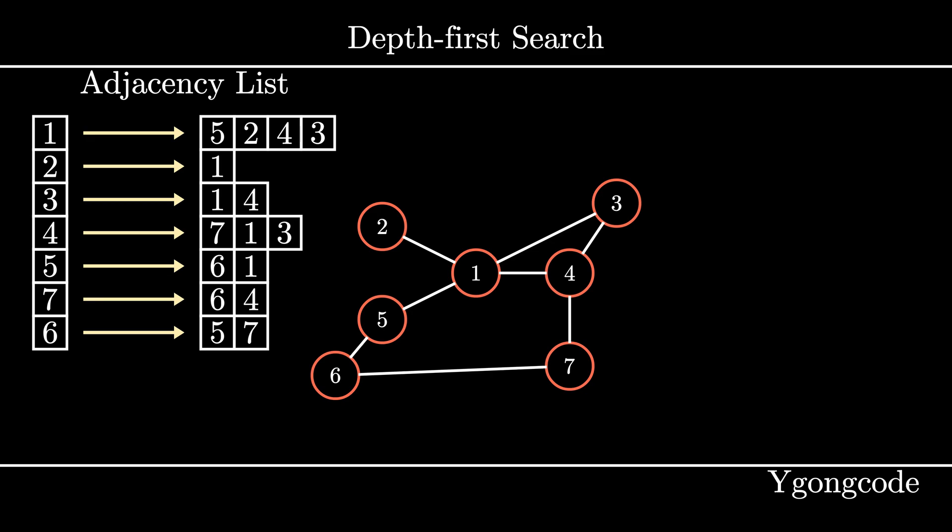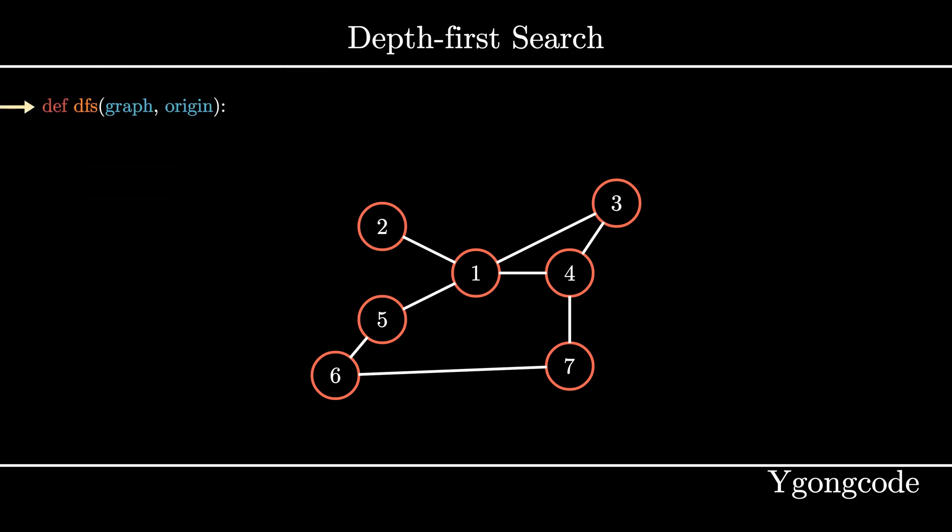So here we have a graph on the right and its corresponding adjacency list on the left. Now let us go over the algorithm for depth first search.